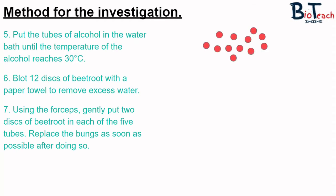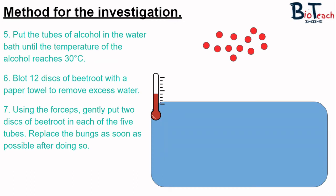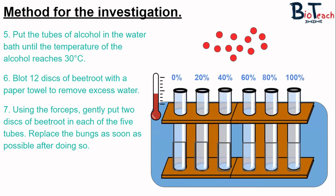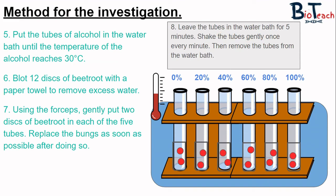When the temperature has reached 30 degrees, you need to blot 12 discs of beetroot. If you have a helpful technician or teacher they may have already prepped these discs, but if you need to make them yourself they can be made using a cork borer size four and then sliced down to size. We blot the outside of these to remove any excess water and also to blot away any pigment that might be on the outside of the disc. Using forceps, transfer two discs into each of the boiling tubes and replace the bung. These will be left in the water bath for five minutes, and every time a minute passes you are required to shake the tubes gently to mix up the solution.